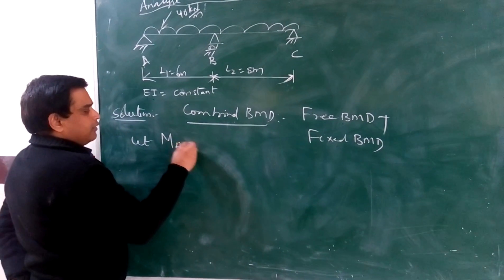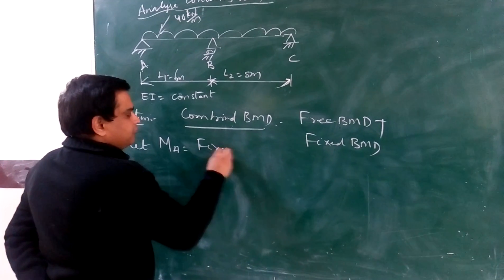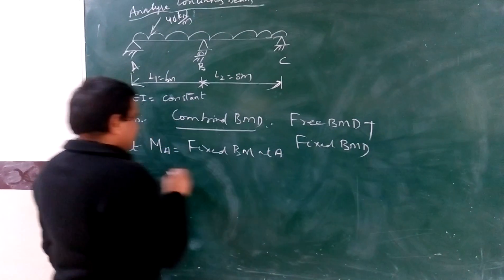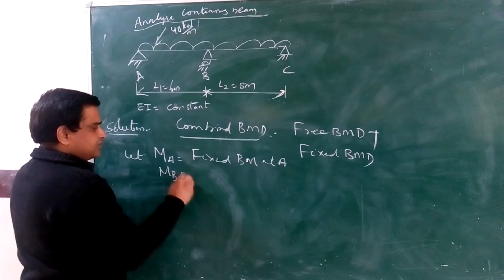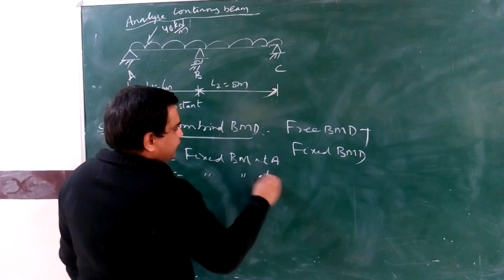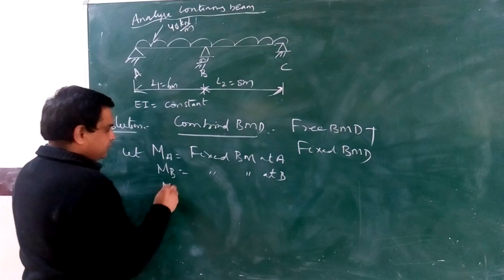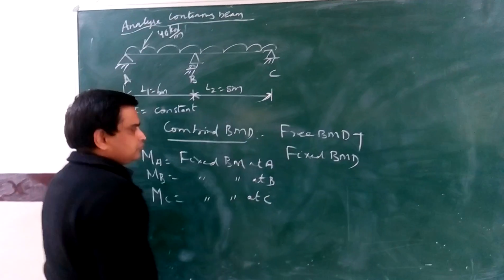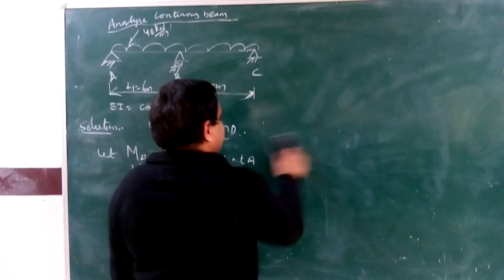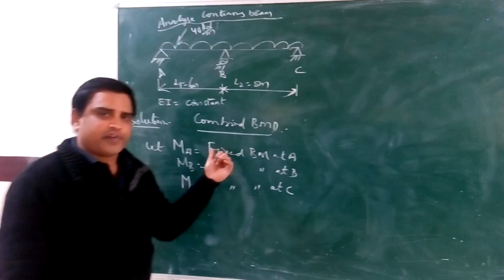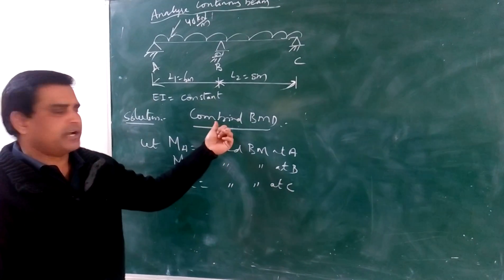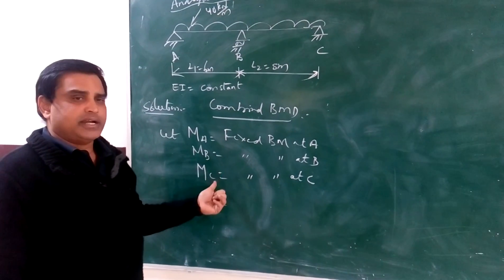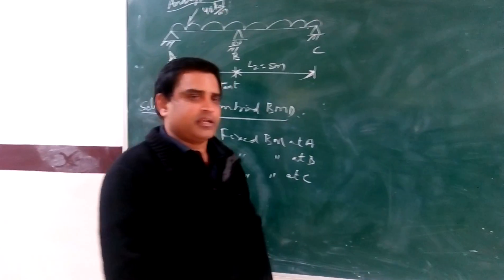Let MA be the fixed-end bending moment at A, MB be the fixed-end bending moment at B, and MC be the fixed-end bending moment at C. To draw the combined bending moment diagram, we first need to find the values of the fixed-end bending moments at A, B, and C by using the 3-moment equation.